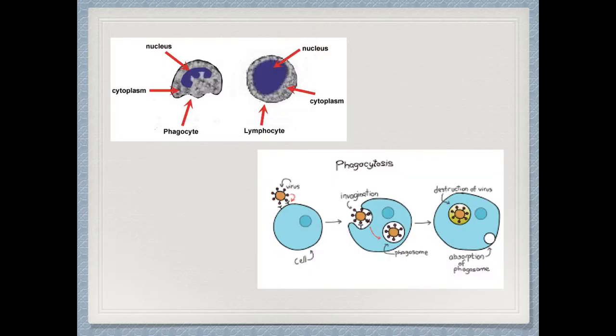Here are white blood cells. There are two different types: phagocytes and lymphocytes. Lymphocytes work by secreting antibodies that combine with the antigens on the bacteria that get into the body. This then helps the phagocytes to identify these bacteria.